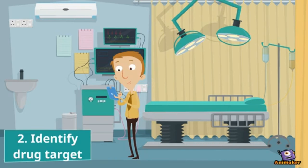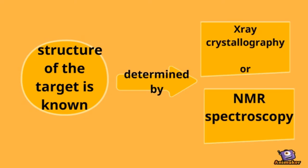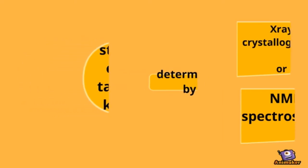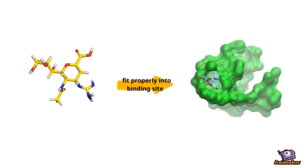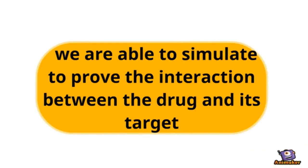The target structure is a protein — either a receptor, an enzyme, or DNA — that can be determined and identified using a bioinformatic device or pharmacologic activity. If the structure of the target is known, for example determined by X-ray crystallography or NMR spectroscopy, a drug molecule can be determined that can fit properly into the binding sites of the target, allowing us to simulate and prove the interaction between the drug and its target.